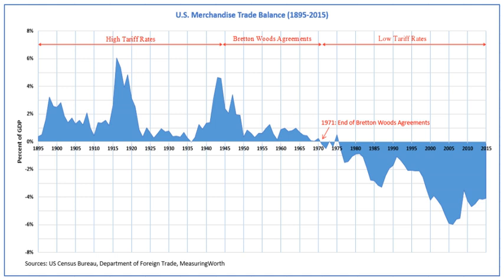Only the United States' contribution of $570 million was actually available for IBRD lending. In addition, because the only available market for IBRD bonds was the conservative Wall Street banking market, the IBRD was forced to adopt a conservative lending policy, granting loans only when repayment was assured. Given these problems, by 1947 the IMF and the IBRD themselves were admitting that they could not deal with the international monetary system's economic problems. The United States set up the European Recovery Program — the Marshall Plan — to provide large-scale financial and economic aid for rebuilding Europe largely through grants rather than loans.